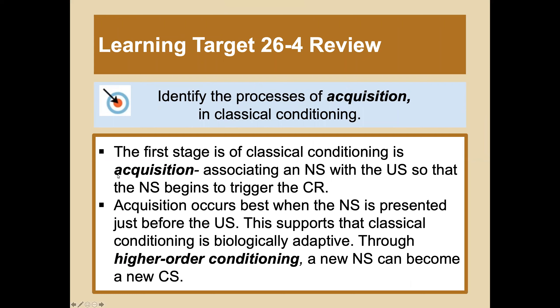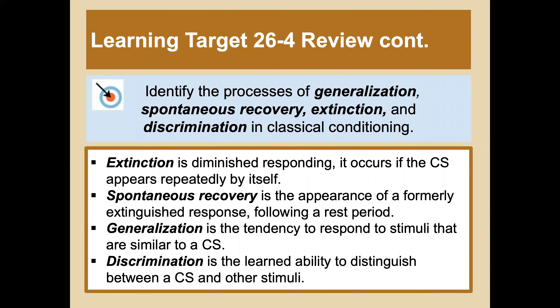The first stage of classical conditioning is acquisition — associating a neutral stimulus with the unconditioned stimulus so that the neutral stimulus begins to trigger the conditioned response. Acquisition occurs best when the neutral stimulus is presented just before the unconditioned stimulus. Extinction is diminished responding — it occurs when the conditioned stimulus appears repeatedly by itself without the unconditioned stimulus. Spontaneous recovery is the appearance of a formally extinguished response following a rest period. Generalization is the tendency to respond to stimuli similar to the conditioned stimulus, and discrimination is the learned ability to distinguish between a conditioned stimulus and other similar stimuli.